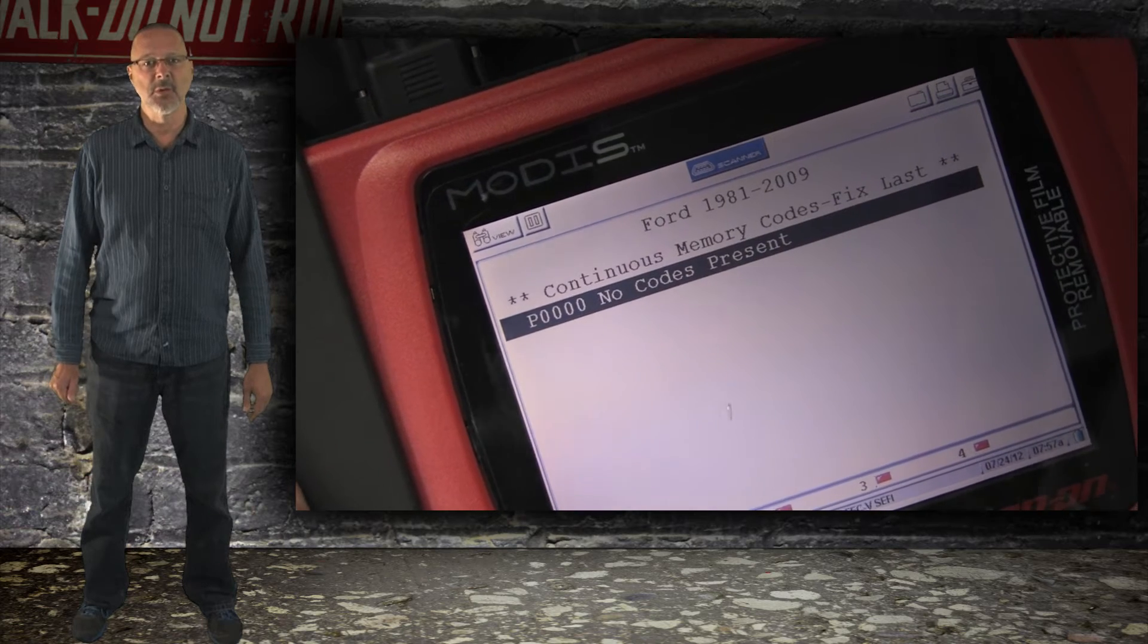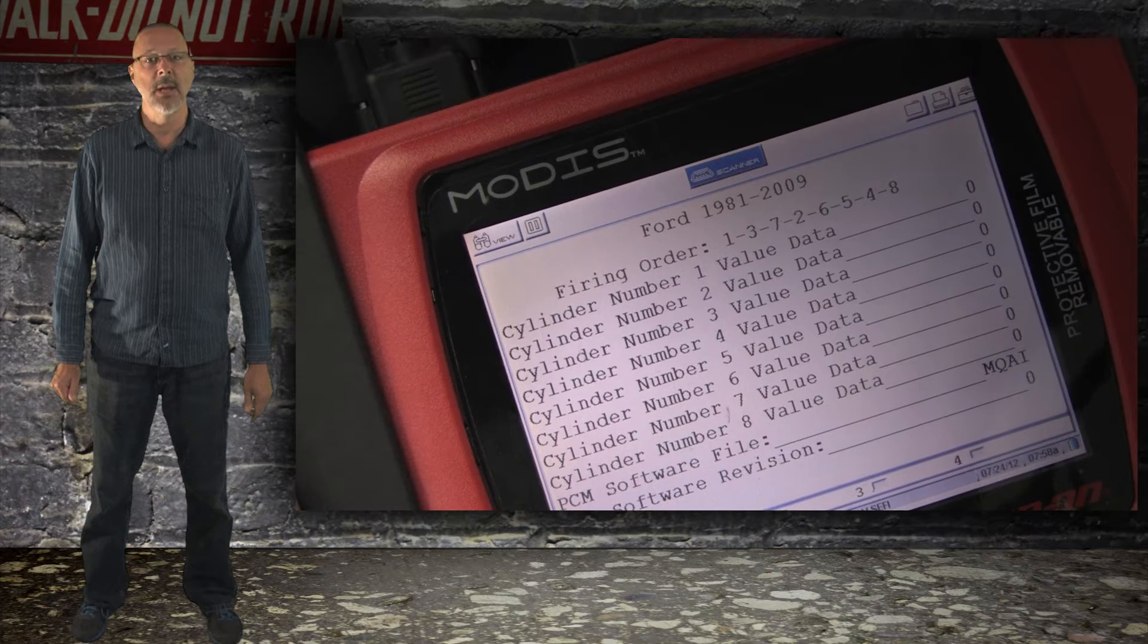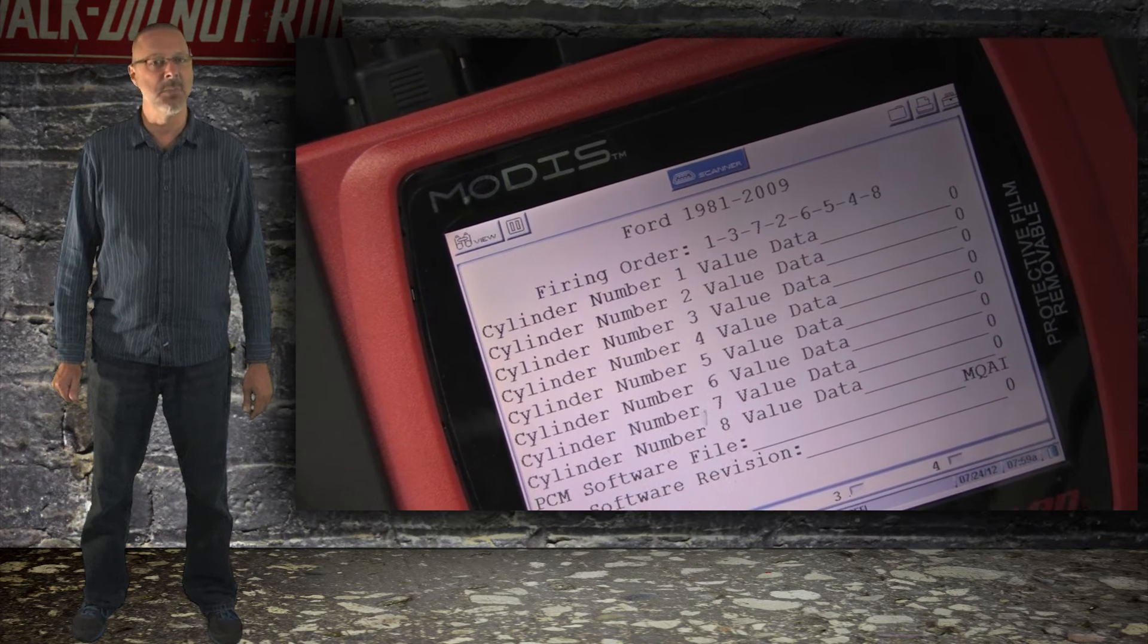We decided to check for codes first. None were found. We then looked at the misfire counter and as you can see, even when we were power braking, no consistent misfires were being detected.